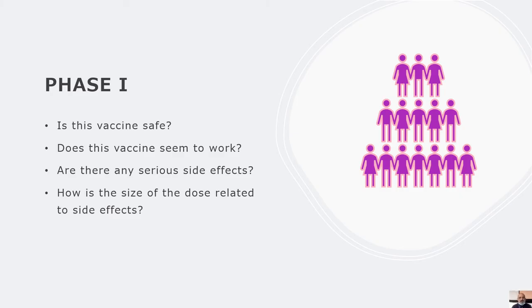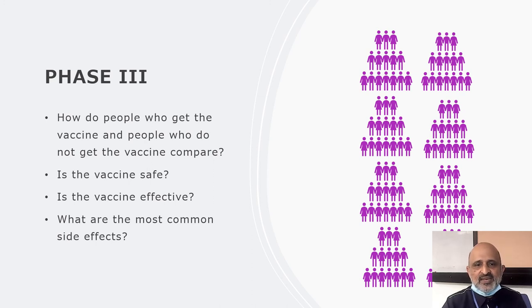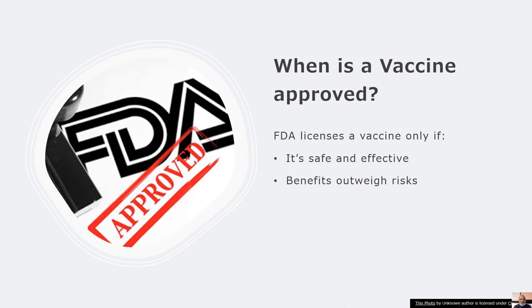In phase one trials, we ask: Is the vaccine safe? Does it seem to work? Are there any serious side effects? And how is the dose size related to side effects? In phase two, the trial is conducted across a larger population size and we look at the most common short-term and long-term side effects and the response of the volunteers' immune system, which can be studied by examining their antibody profile. In phase three, we move to a larger population set to assess the safety and effectiveness of the vaccination in terms of the immune response and the most common side effects. In phase four, the post-trial phase, the long-term effects are tested or ascertained across the population.